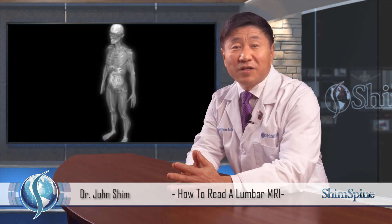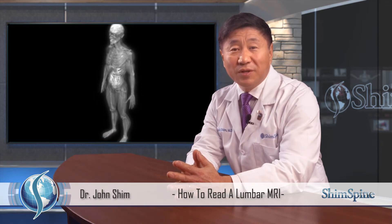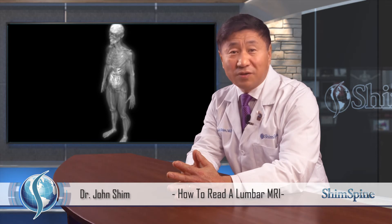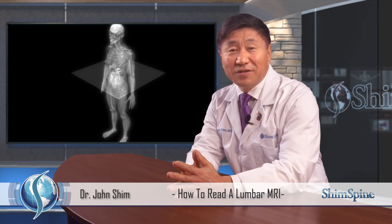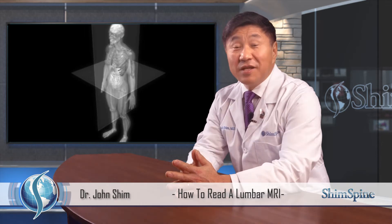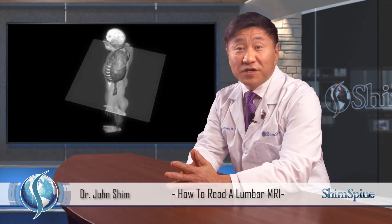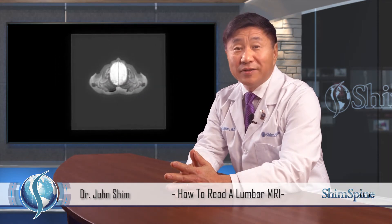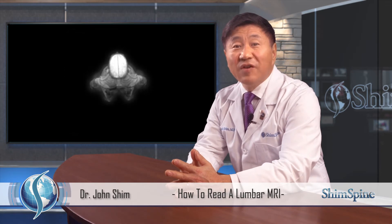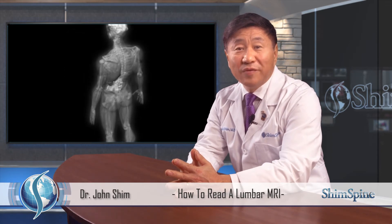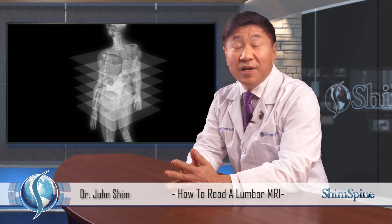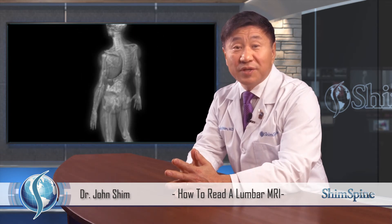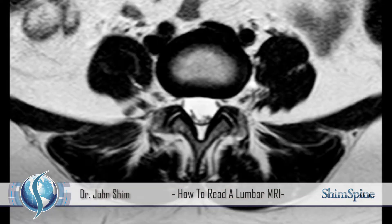Radiologists typically look at spine MRIs in several different planes. The two main planes are the axial plane and the sagittal plane. The axial plane is a cross-sectional view from the top of the body. I like to call it the bologna slice view. If you've ever been to the deli counter, the bologna loaf is placed onto the slicer. The cross-sectional view is similar to the axial view. As you can see on the screen, that is the axial view of the lumbar spine.